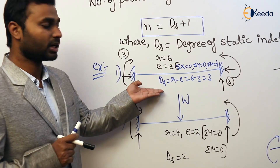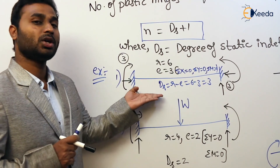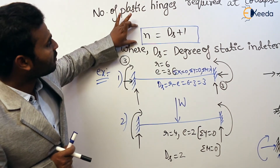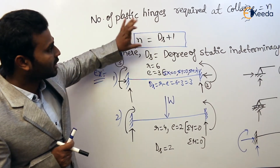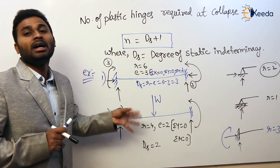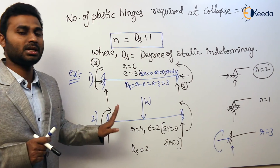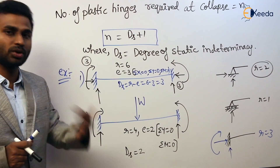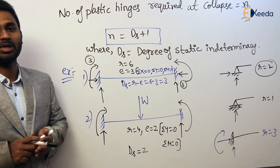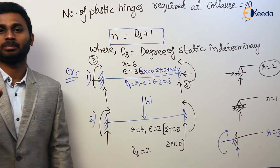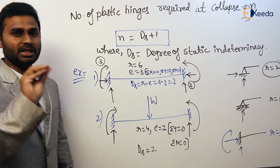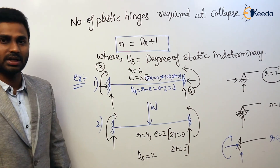Regarding static indeterminacy and kinematic indeterminacy, you are going to discuss these in structural analysis in detail. But here, for the calculation of number of plastic hinges required at collapse, we require DS. That is the reason I have revised it. So this is about static indeterminacy. Always remember: first for a given structure, check whether it is a generalized loading or a particular loading — that is it.